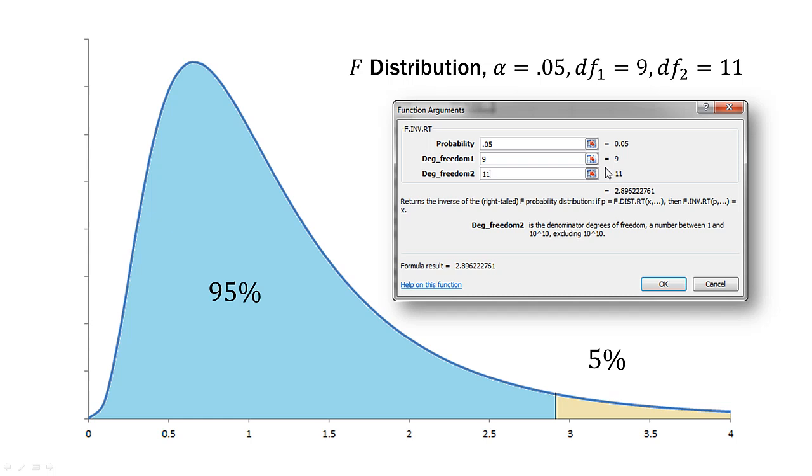Now I'm just gonna put the screenshot from Excel 2010, so you know how to find it. You use the F dot INV dot RT. So the F inverse right tailed. So in the probability box, we put 0.05. That's our alpha. Degrees of freedom one is the numerator degrees of freedom. That's nine. And degrees of freedom two, that is our denominator degrees of freedom. That's 11. So you will see we have a result of 2.89622.